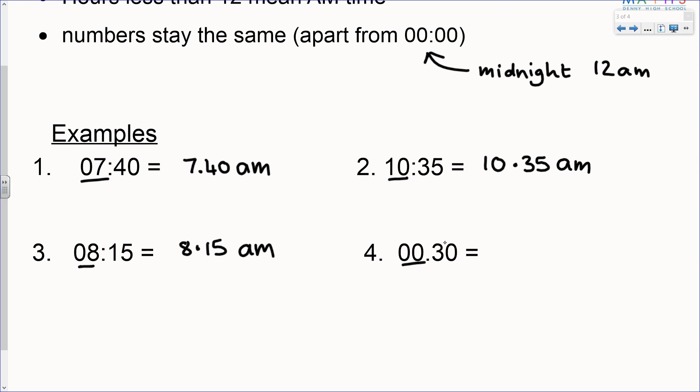Now the last one is the only one that's different. When you see 00 you need to know that means midnight. So that becomes 12:30 am.